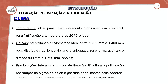Uma das condições que pode influenciar dentro do processo de polinização e fecundação do maracujá são as intempéries. O primeiro fator é o clima, que se subdivide em luminosidade e disponibilidade de luz. A temperatura ideal para o desenvolvimento e frutificação fica em torno de 25 a 26 graus, podendo chegar até 30 graus utilizando híbridos que favorecem nesse processo.